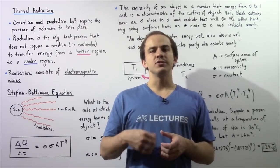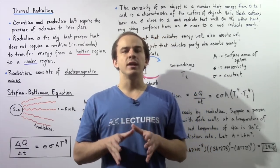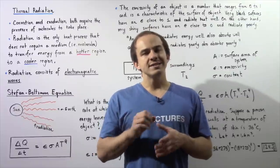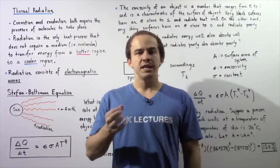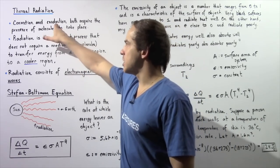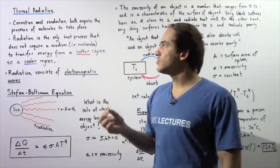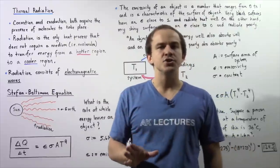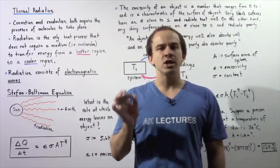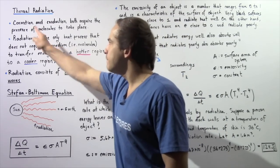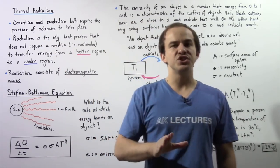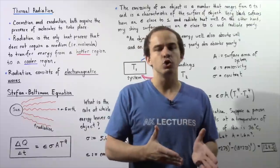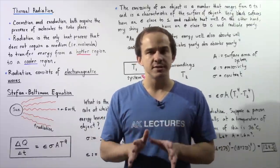Let's continue our discussion on transfer of energy as a result of heat — a difference in temperature between two or more systems. So far we've spoken about two types of heat processes: conduction and convection. Conduction is a transfer of energy due to a temperature difference where two solid objects are physically touching. Convection, which takes place mostly in liquids and gases, is a transfer of energy via mass movement of molecules and atoms over very large distances.